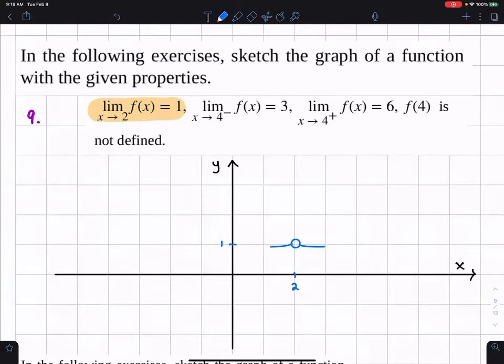On the other hand, as you're pointing out, like at 4, you have a left-hand limit and a right-hand limit. So as we approach 4 from the left, we have 3, which is up here. So somehow I need to connect these. And so let's just make them connected like that.